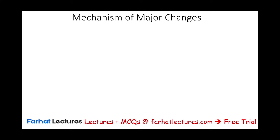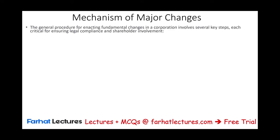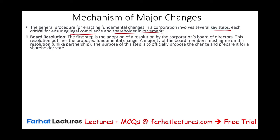The first thing to discuss is the mechanism of these changes — how they come about. These changes require approval from both the board of directors and the shareholders. The general procedures involve several key steps critical to ensuring legal compliance and shareholder involvement. The first step is the adoption of a resolution by the corporate board of directors. This resolution outlines the proposed fundamental change, and a majority of board members must agree — unlike a partnership where a unanimous decision is required.